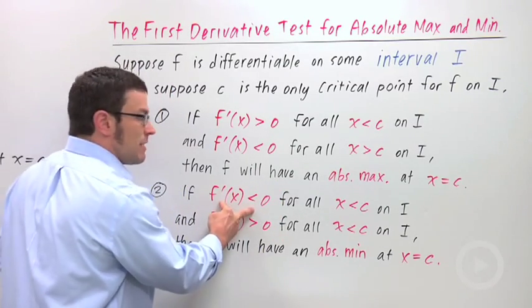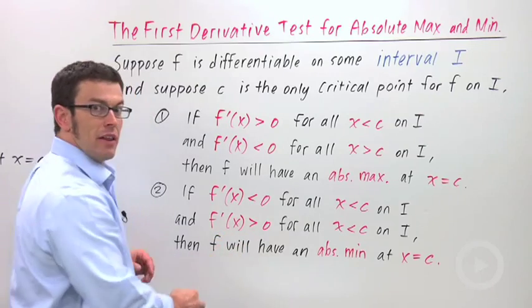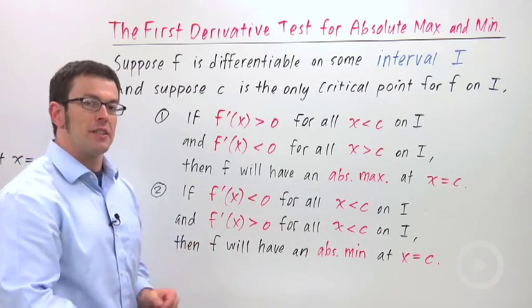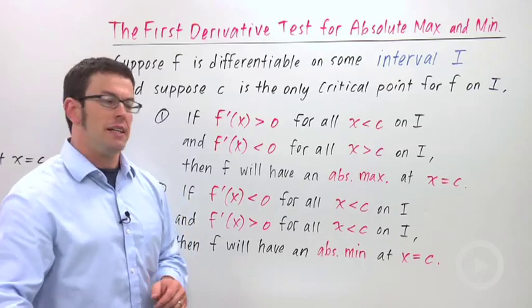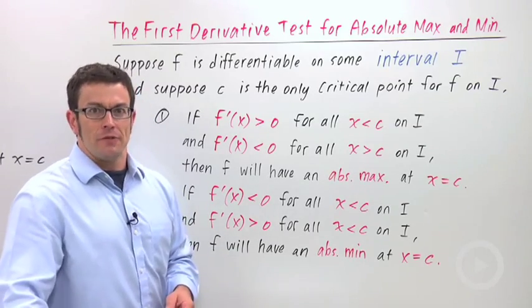And if it's negative on the left and positive on the right, it's decreasing and then increasing. It's going to have an absolute minimum at x equals c. We'll use this method in the next few problems.